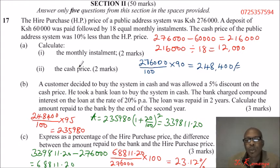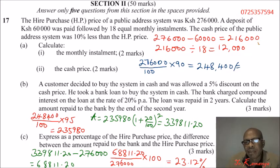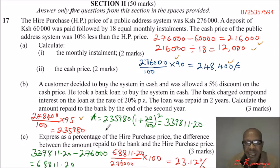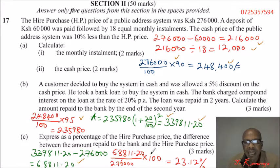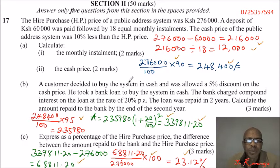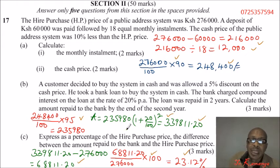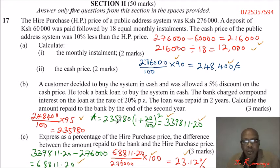For the mark allocation: part (a)(i) gets one mark each for working and answer; part (a)(ii) gets two marks; part (b) gets three marks — one for the discount, one for applying the formula, one for the answer; part (c) also gets three marks. That totals 10 marks. This formula for computing the amount accrued under compound interest is very important. I hope you have followed that.